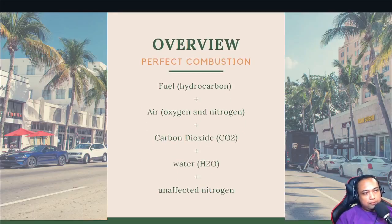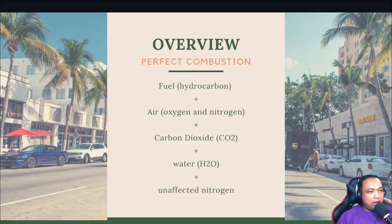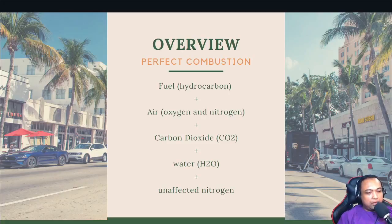Looking at the overview of perfect combustion, there are five elements. First, we have hydrocarbon — what we call unburned gases — meaning the fuel does not one hundred percent burn in the combustion chamber. The hydrocarbon or fuel mixes with the exhaust gas and goes through to the exhaust manifold. Second is air, which is oxygen and nitrogen, then carbon dioxide,